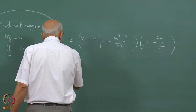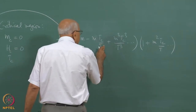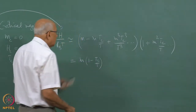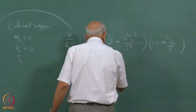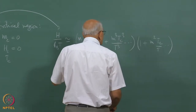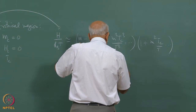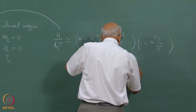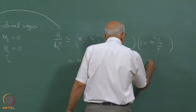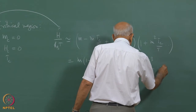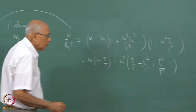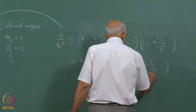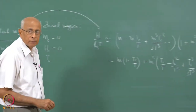Writing this out, we get H/k_BT equal to M times (1 minus T_c/T), plus M³ times (T_c/T minus T_c²/T² plus T_c³/T³) divided by 3 factorial, and so on. There is a factor of 3 in the denominator from the Taylor expansion of tanh. This is the expanded equation of state near the critical region.